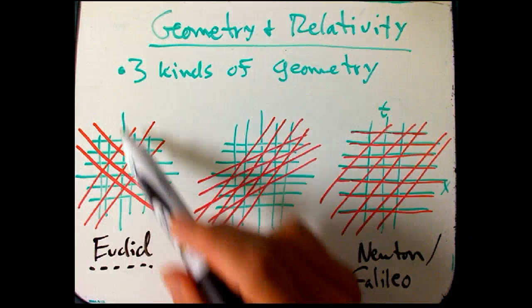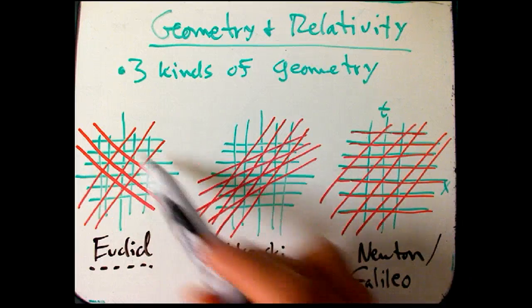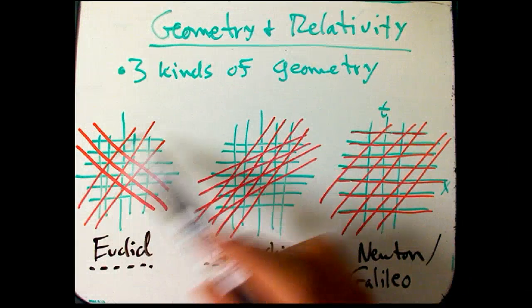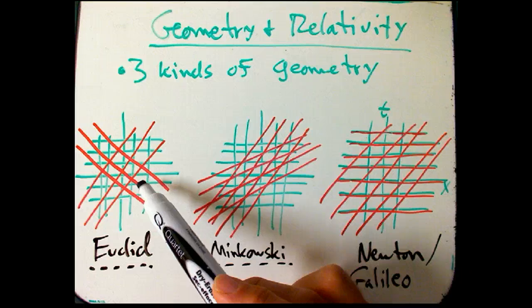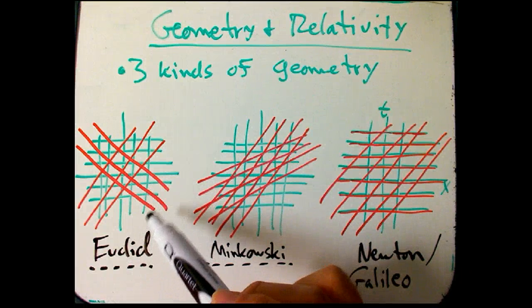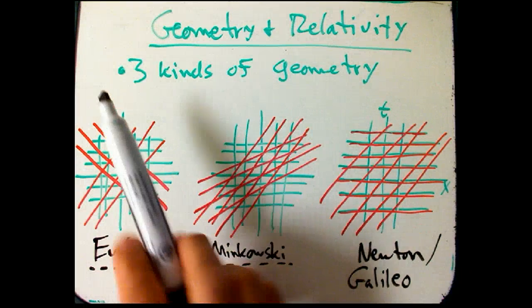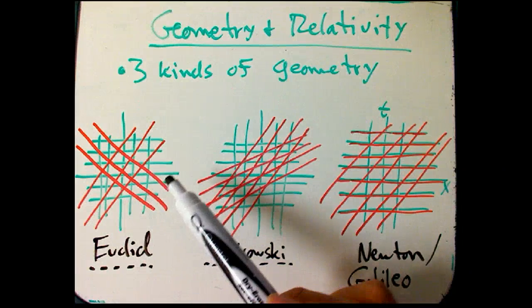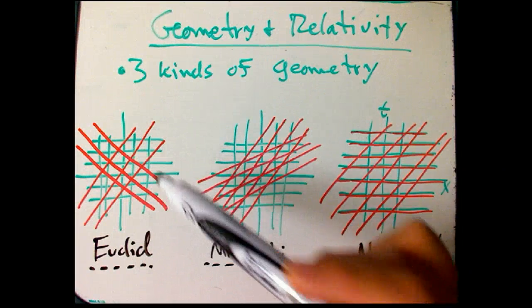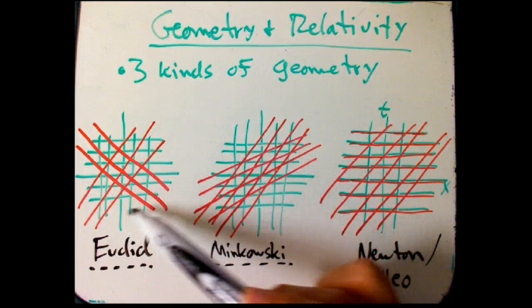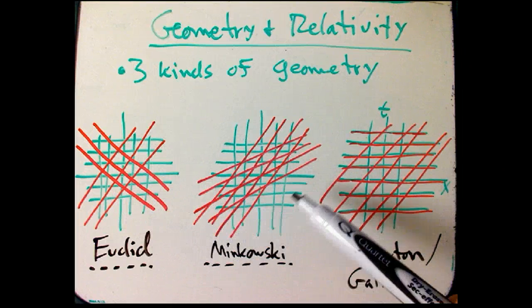And here I have pictures of a Euclidean coordinate system in green, and then another Euclidean, a rotated coordinate system in red. And so one way to describe Euclidean geometry, it's the kind of geometry where that kind of transformation is legal, or that these kinds of coordinates are preferred. And I certainly didn't start out talking about coordinates, but it's a good picture to summarize it.